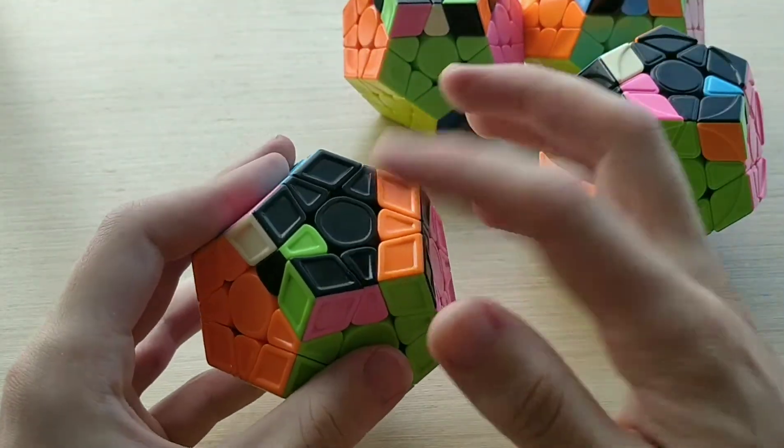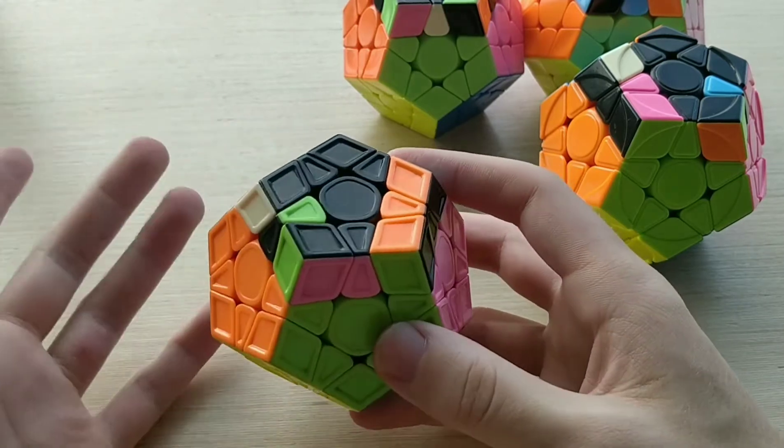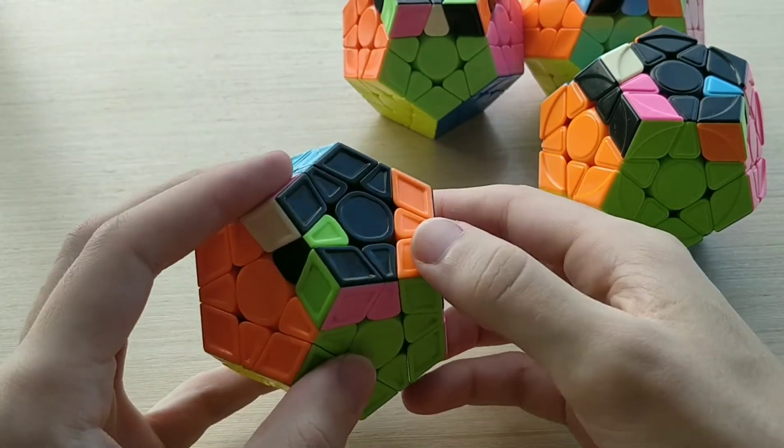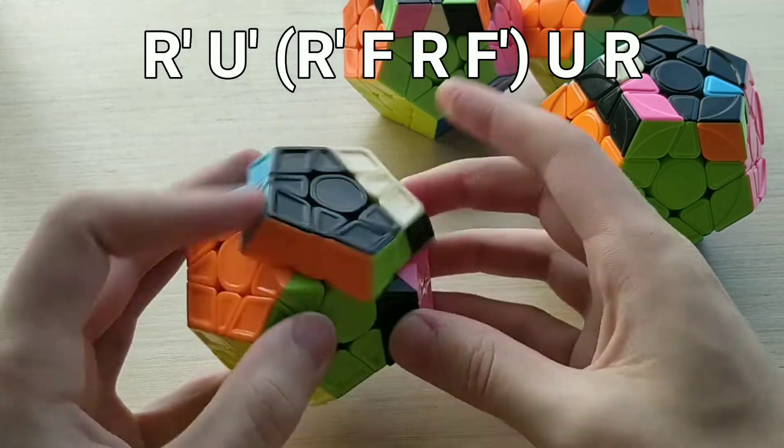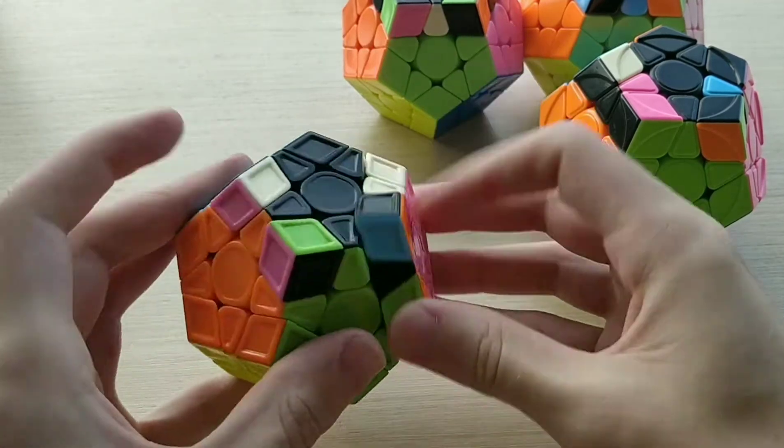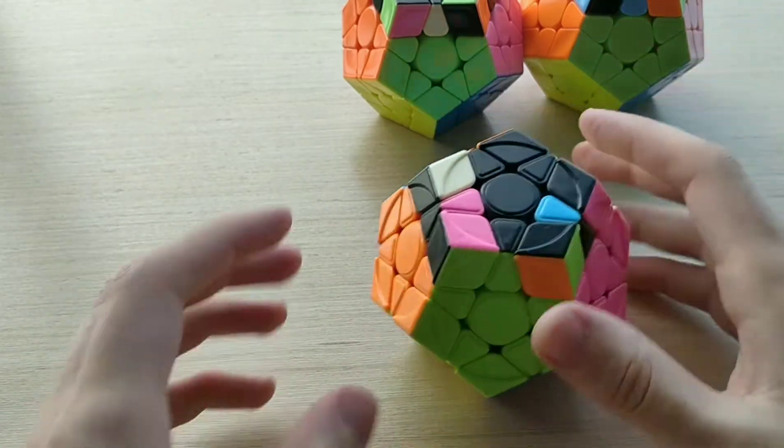As for the algs, this one here is 8a plus, and the alg is just a 3x3 transfer, so it's the alg you might think you'd use, which is r' u' f, sledge, u, r. So, like that. No fancy finger tricks or anything, just simple.